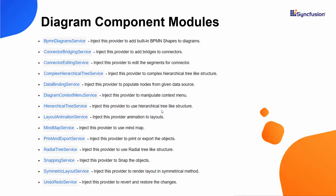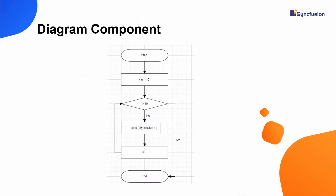The Angular Diagram features are separated into individual modules. If I want to use the features in the diagram, I need to inject their required services. First, I am going to create a simple flowchart. I will show you how to create nodes and connectors, and how to link the nodes using connectors.